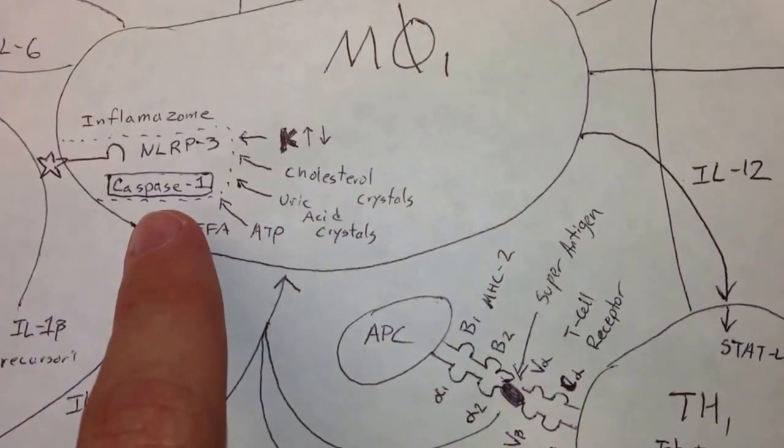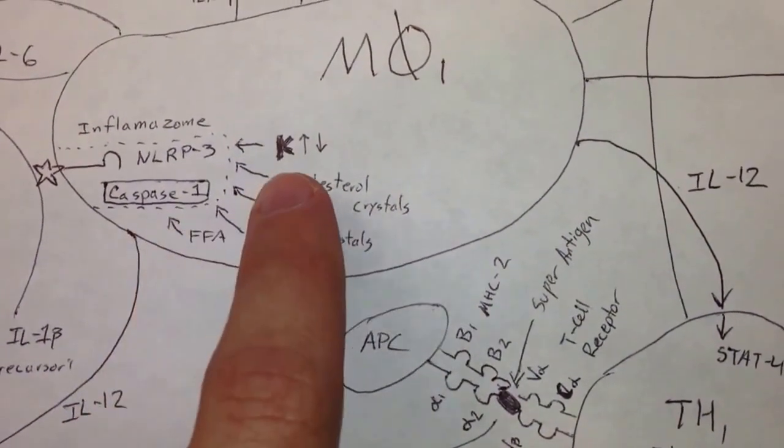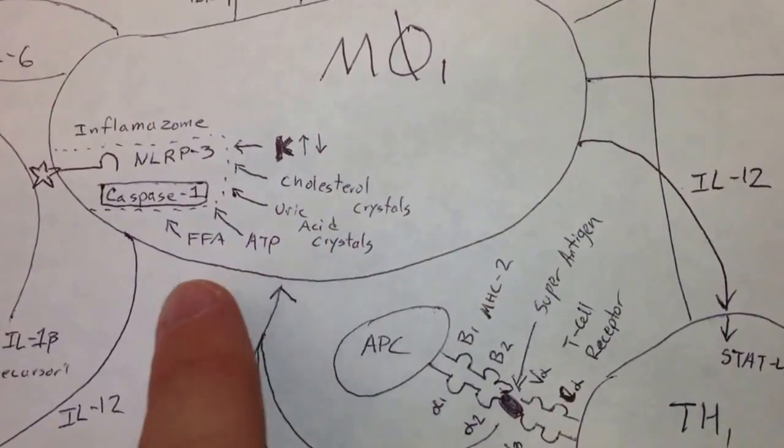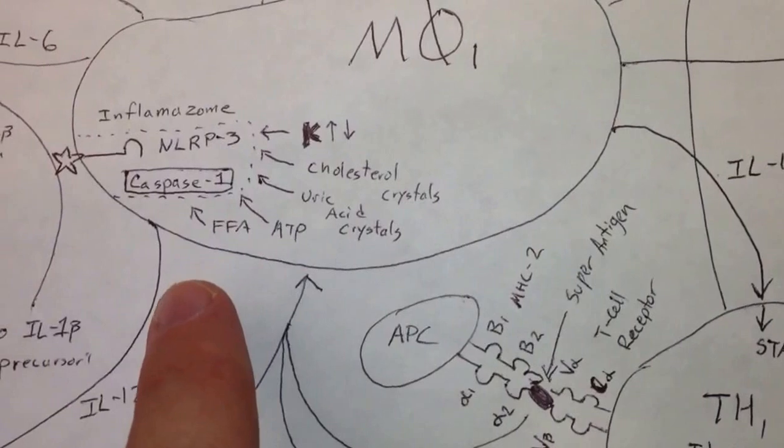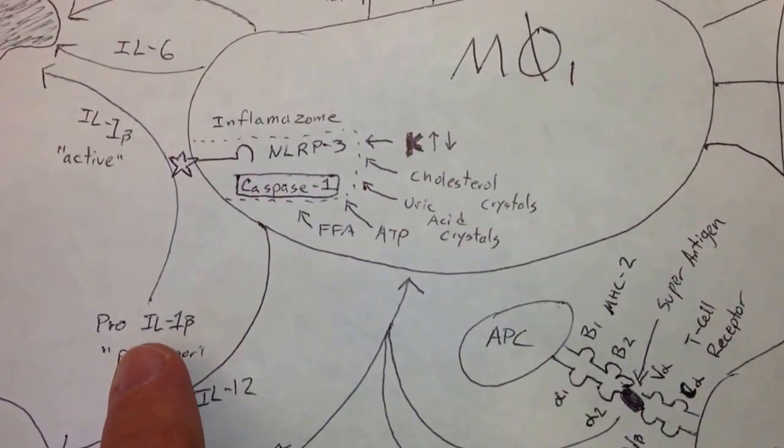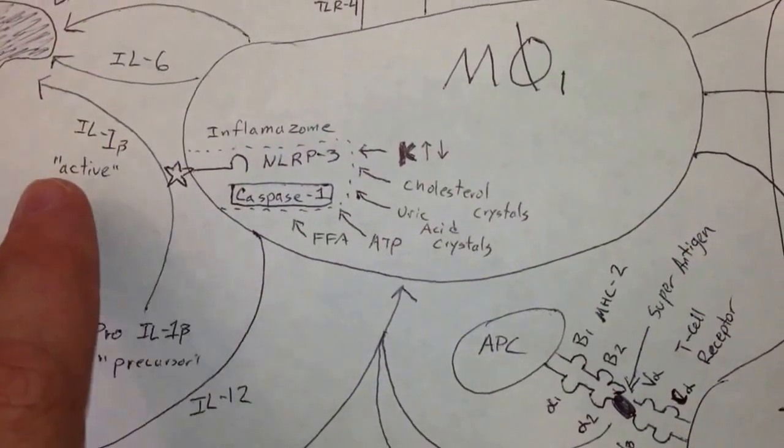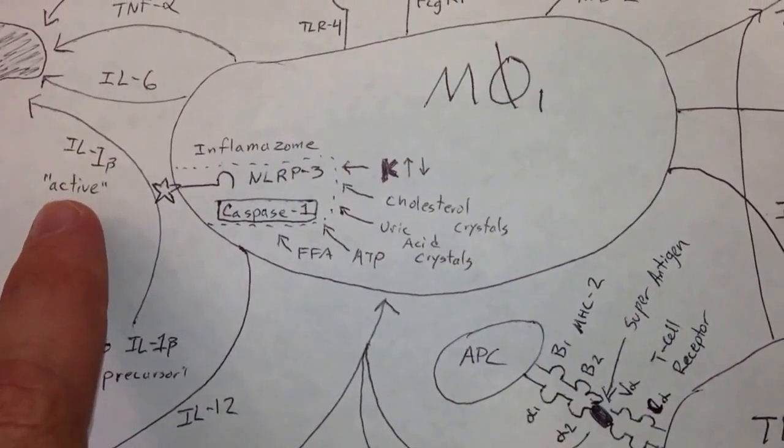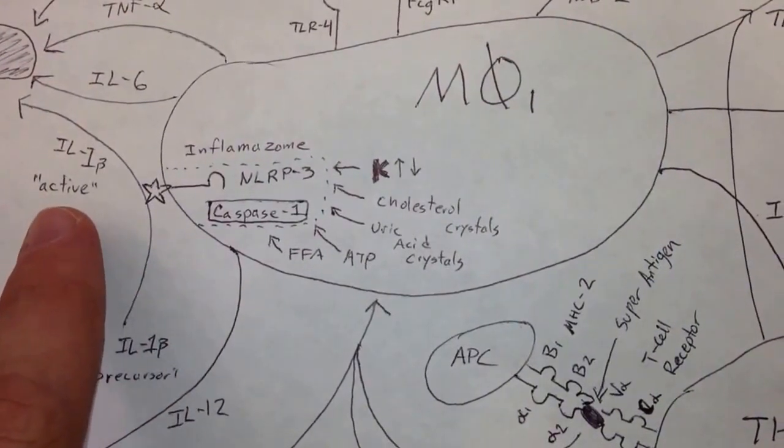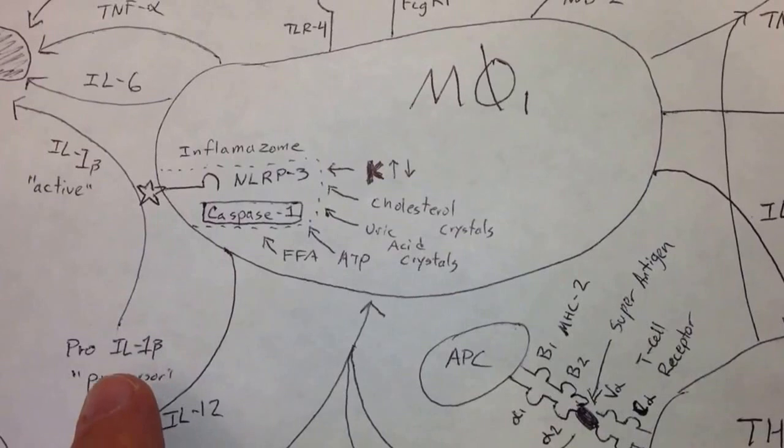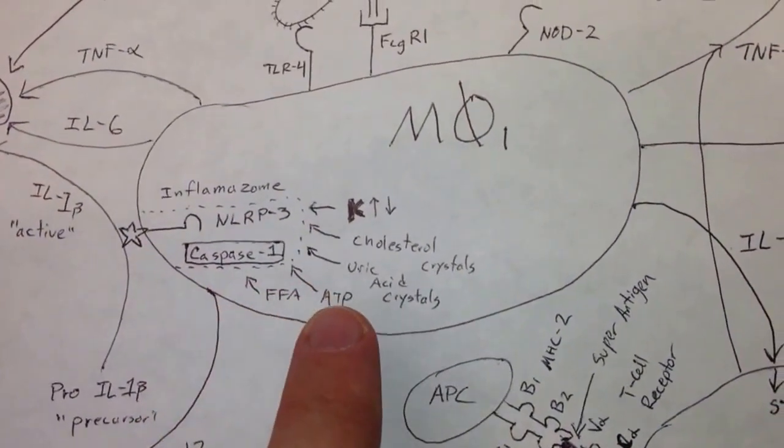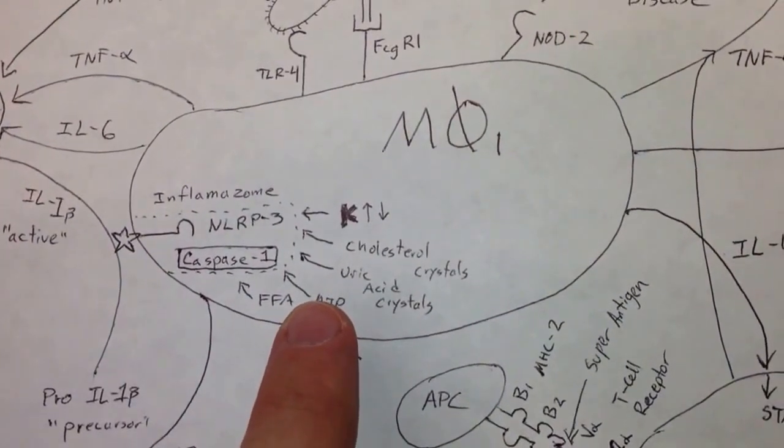And when those sense changes in calcium, cholesterol crystals, uric acid crystals, ATP, or free fatty acids, it's going to take precursor IL-1B and change it into the active form of IL-1 beta. So you've got interleukin-1 beta being created by this inflammasome when it's activated in the type 1 macrophage.